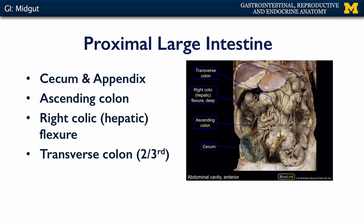Here we can see the cadaveric view of the ileocecal valve, the cecum, and the ascending colon. As the ascending colon flexes into the transverse colon, we have what's known as the right colic or hepatic flexure. The transverse colon continues, and we can see these sacculations or haustra. If dissected, we'd be able to see the semilunar folds separating the haustra. This transverse colon then merges into the hindgut, which we should discuss next.